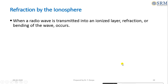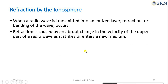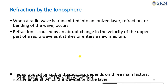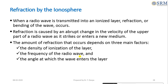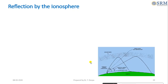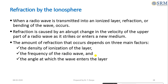When the radio wave is transmitted into an ionized layer, refraction or bending of the wave occurs. The refraction is caused by an abrupt change in the velocity of part of the radio wave. The amount of refraction that occurs depends on three main factors.